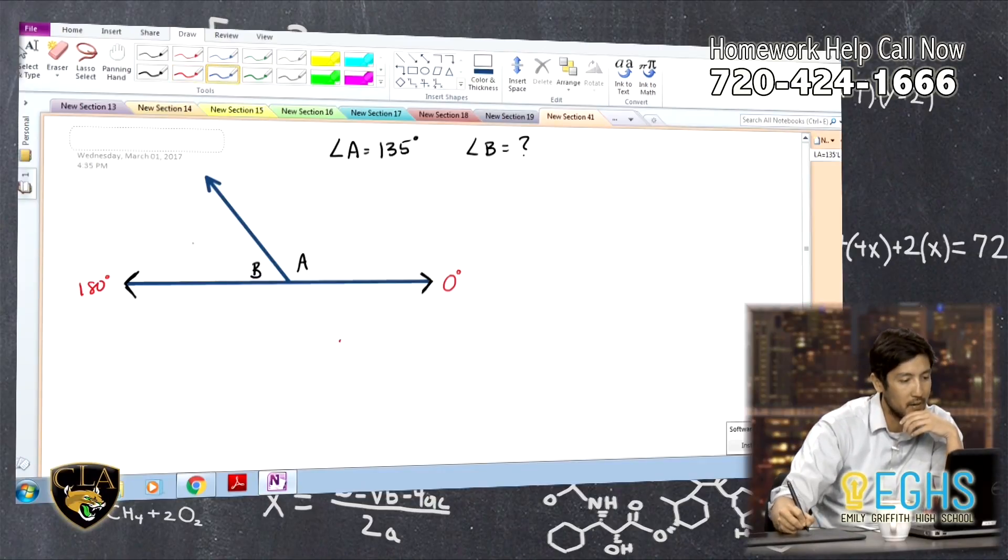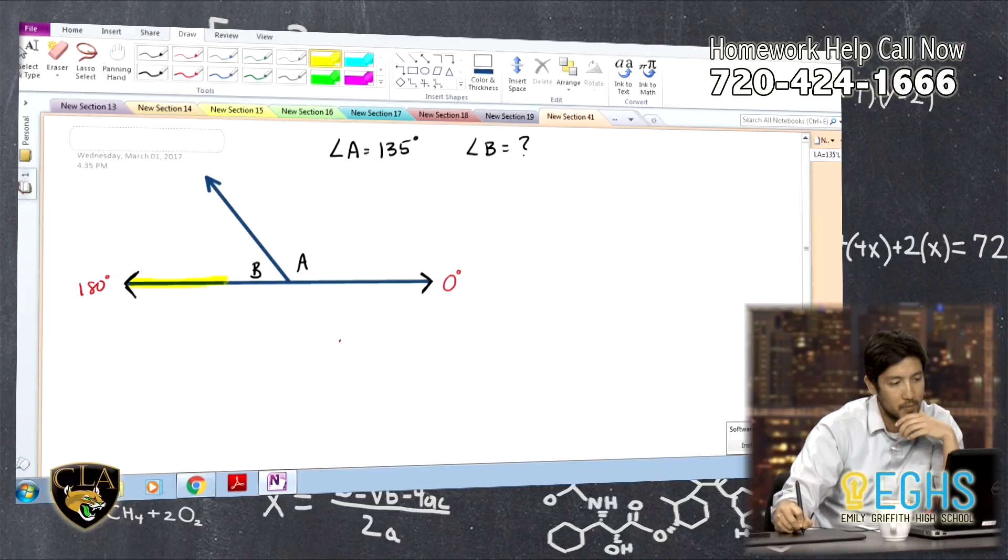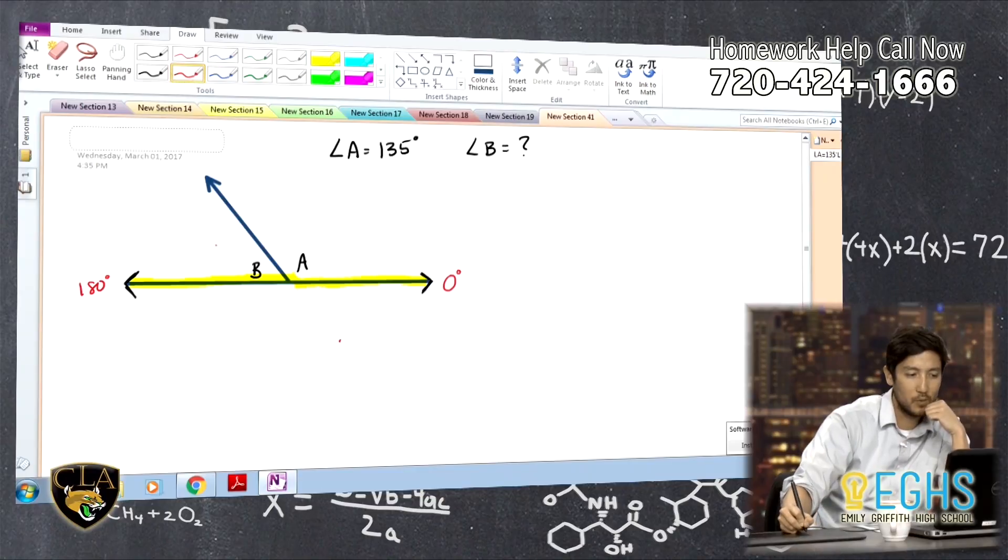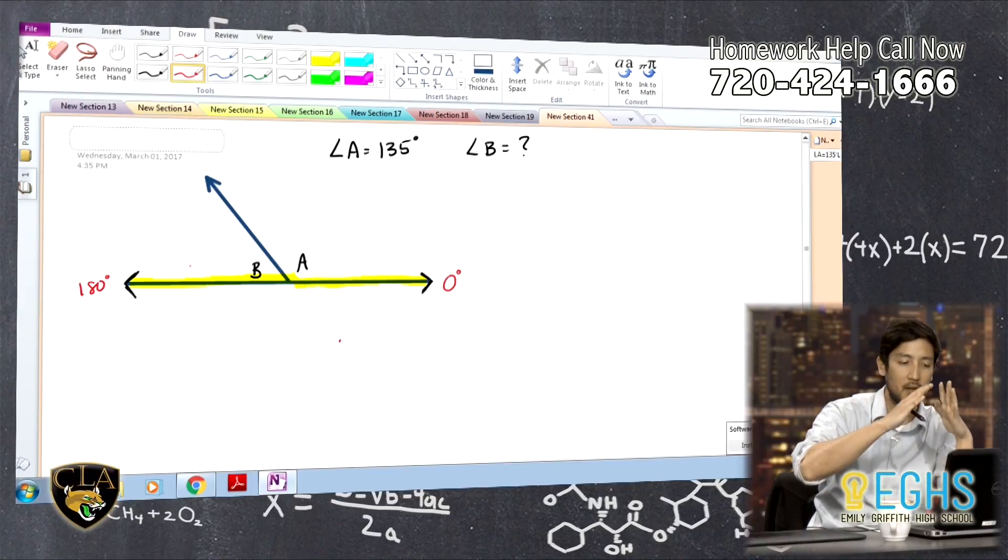So here's what we know. If I know that this line down here that I'm highlighting in yellow is 180 degrees, what you should also notice is that we're kind of sharing this yellow line to create these other two angles. So kind of putting them together, they should combine to be 180 degrees.